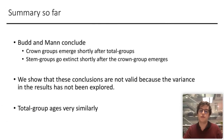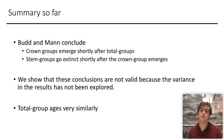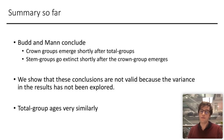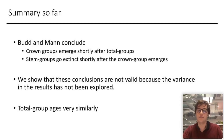To summarise what I've said so far: the previous paper by Bud and Mann concludes that crown groups emerge shortly after total groups and that stem groups go extinct shortly after the crown group emerges. We've shown that there's a lot of variation not explored in that paper, which means those observations are not necessarily true. We've also analysed the data in a different way to show that total group ages are simulated quite similarly.